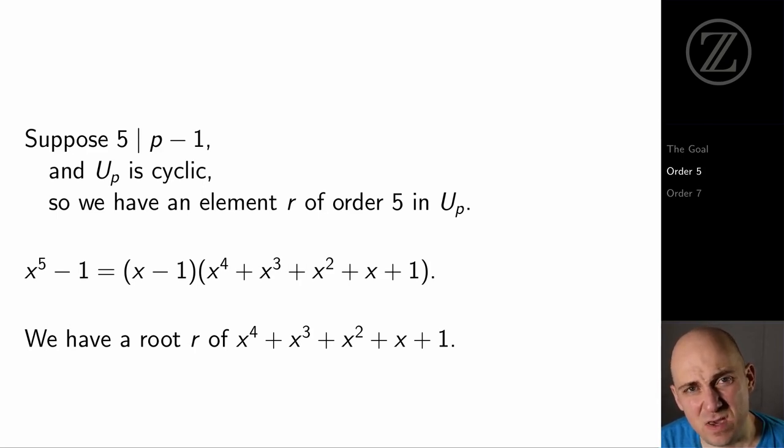And if we've got an element in U_p that actually has order 5, then that element to the 5th power minus 1 is 0. It's a root of x to the 5th minus 1. But it can't be 1. So it can't be a root of x minus 1. It has to be a root of x to the 4th plus x cubed plus x squared plus x plus 1.